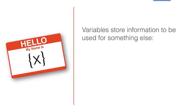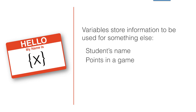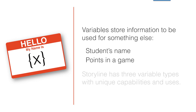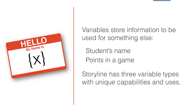Variables are a way to store information in Storyline to use for something else, such as storing a student's name or keeping track of points in a game. There are three types of variables, each one with their own capabilities and intended uses.